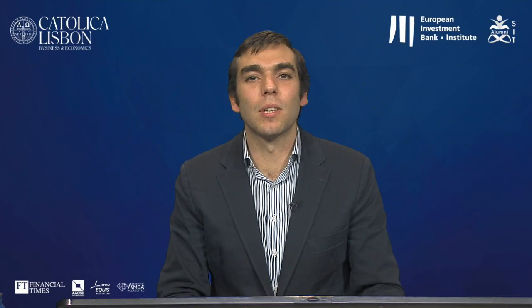Let me now summarize all nine tricks. These studies do have some limitations — they focus on particular contexts like crowdfunding texts, videos, live CEO speeches, or annual reports. But the arguments behind all these language choices are quite generalizable. Here is the cheat sheet you can print and keep at your desk. It covers three components of the persuasion process — ethos, logos, and pathos — with three tricks summarized for each.